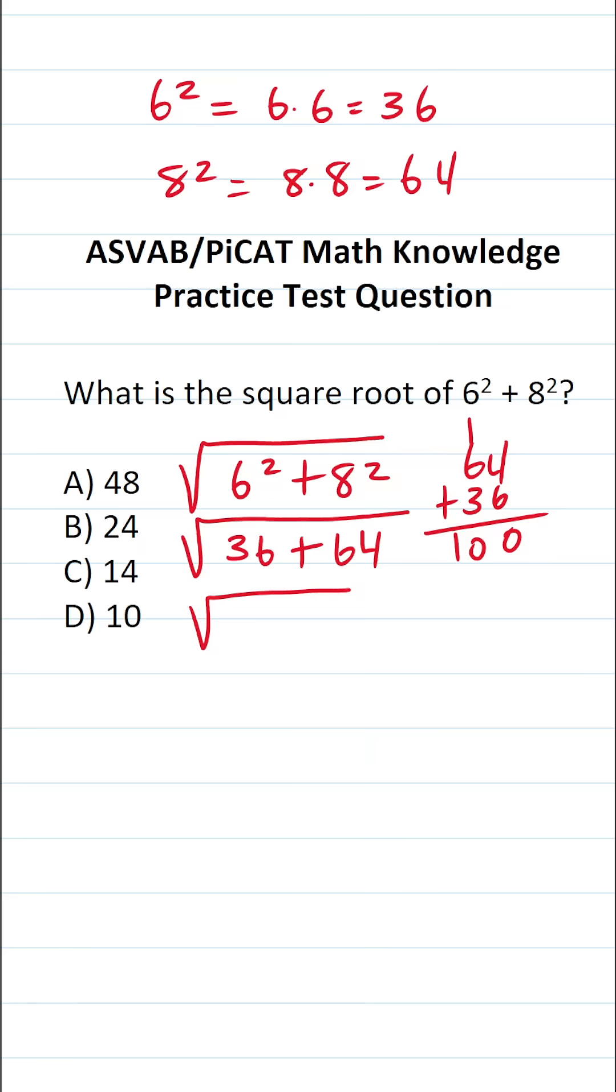So this, in other words, is what is the square root of 100? The square root of 100 is 10. So this one is going to be D, of course.